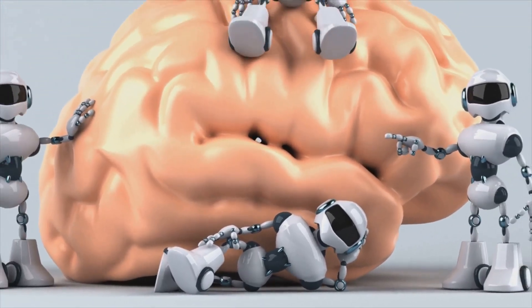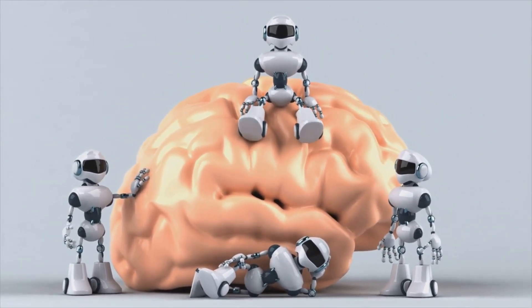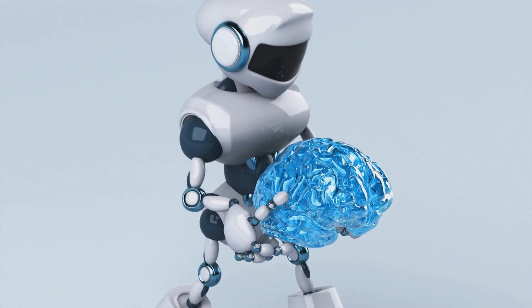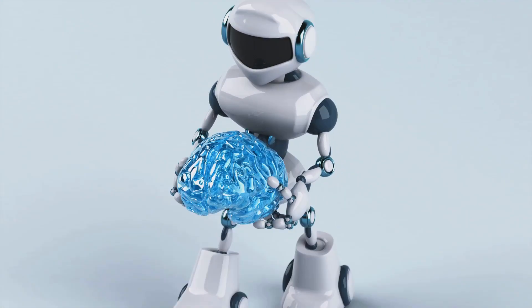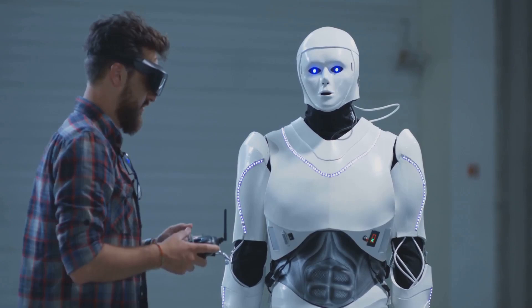The algorithms, the maestros of this orchestra, are meticulously designed to process vast amounts of data quickly and accurately. They are the brains behind the movements, deciding when, where, and how each part of the robot should move. They dictate the pace, the rhythm, and the sequence of every action.